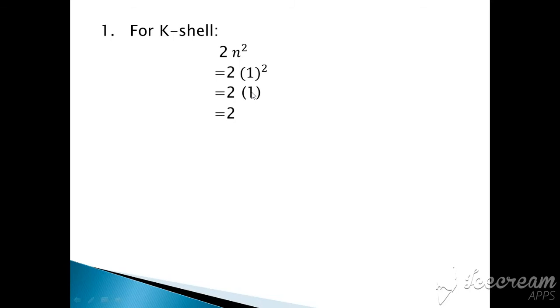only maximum 2 electrons can be found. For L shell, put the formula first: 2n², value of n is 2 here because this is second shell. 2 twos are 4 and 4 twos are 8.